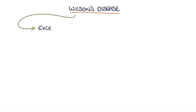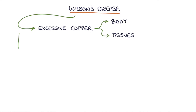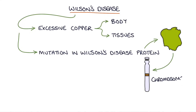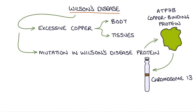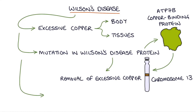Wilson's disease is the excessive accumulation of copper in the body and the tissues. It's caused by a mutation in the Wilson's disease protein, which is on chromosome 13. The Wilson's disease protein also has the name ATP7B copper binding protein, and it's responsible for various functions including the removal of excessive copper in the liver. Genetic inheritance of Wilson's disease is autosomal recessive.